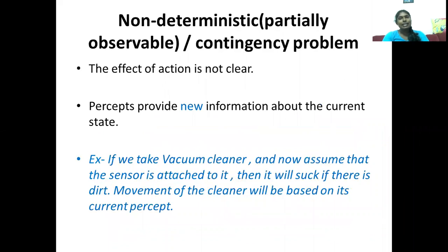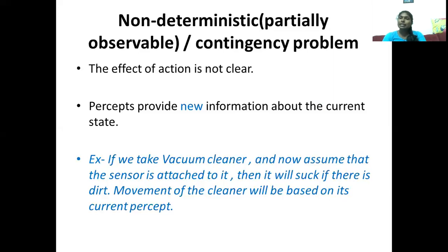The next category is non-deterministic, also called partially observable. Here the agent knows exactly about its current environment and the current situation, but for the next step it may have two or more possibilities. Consider the same vacuum cleaner — when no instruction is given to move left, right, or clean dirt, it has three possibilities. The sensor is attached, but no instruction is given, so three branches can be performed non-deterministically, and any one branch can lead to the final goal state. These kinds of problems are called non-deterministic or partially observable.